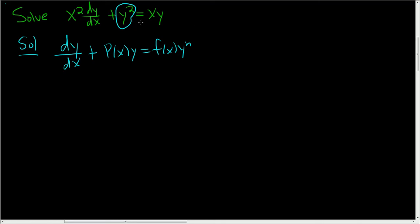So in this case you can see that n is 2. Now you'll notice the y squared is not on the right-hand side. So what we'll do is subtract the y squared from both sides. We want that to be over here and we want the xy to be over here. So we'll subtract the xy. We end up with x² dy/dx minus xy equals minus y².